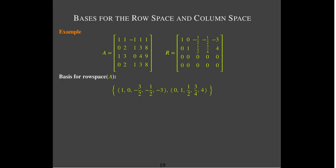It's a bit awkward to deal with fractional components in a vector, so I'll multiply the first vector by two and the second vector by four to clear the fractions and get alternate basis vectors. They're still linearly independent and still span the row space, just without fractions. For the column space, I can see that the leading columns are one and two — that's where I have my leading ones. So I don't take those columns from R; I have to go back to A, look at the corresponding columns, and those column vectors form a basis for the column space.